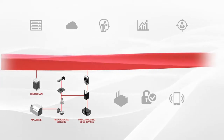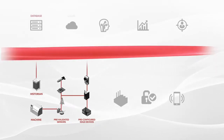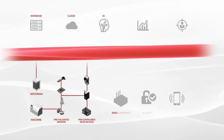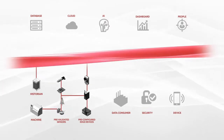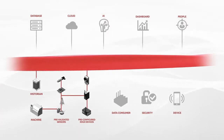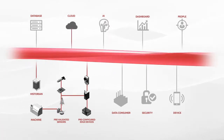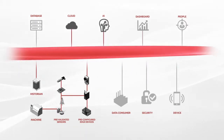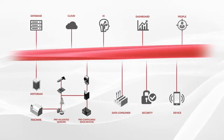No programming necessary. Vortex Edge uses peer-to-peer data movement technology to securely transform and move data. With a connect-once, stream-anywhere approach, once a device or asset is connected to the Vortex Data River, data can move freely northbound or southbound to any cloud, analytic platform, database, or even between devices.